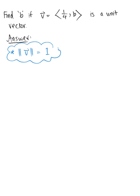Since we know that this given vector is a unit vector, we can say that the magnitude of vector v, which is the square root of 1/4 squared plus b squared, all under the square root, is going to be equal to 1.